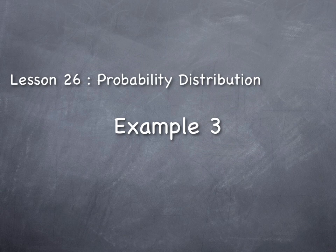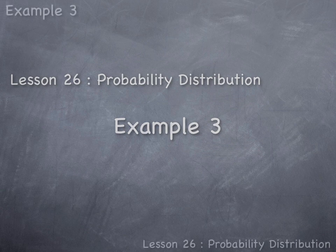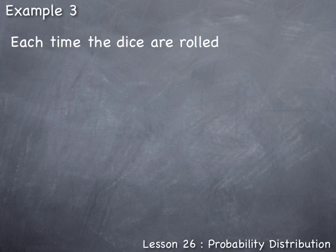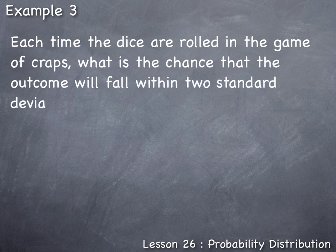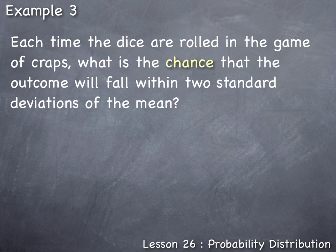Lesson 26, probability distribution example 3. Each time the dice are rolled in the game of craps, what is the chance that the outcome will fall within two standard deviations of the mean? The question asks for the chance, which is just another way of asking for the probability that the outcome falls within plus or minus two standard deviations from the mean.